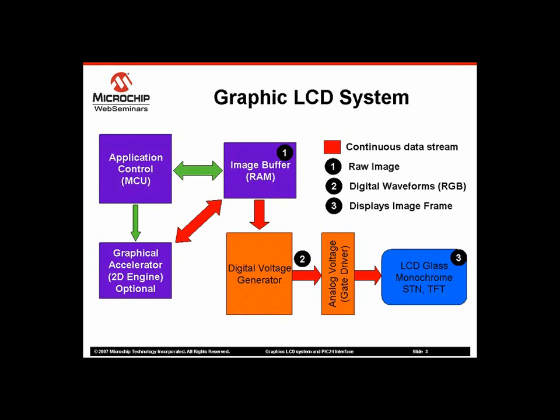The LCD display needs to be refreshed continuously. The graphics LCD system works similar to a picture tube in a CRT — the display is updated horizontally, line by line. The digital voltage generator in this block is the digital equivalent of the picture tube. It reads the image buffer pixel by pixel and generates scan waveforms.